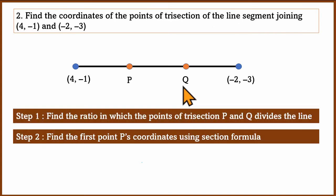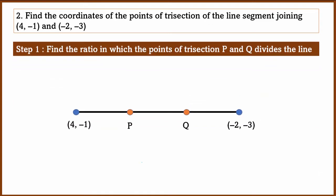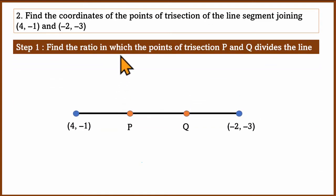So we will solve this in steps. In the first step, find the ratio in which the trisection points P and Q divide the line. Then we use the section formula to find P's coordinates, and then Q's coordinates.